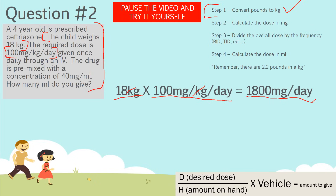Step three: divide the overall dose by the frequency. The dose is 100 milligrams per day given once daily through an IV — the IV route has no real relevance to this calculation. Since it's once a day, we divide by one, so it remains 1,800 milligrams per dose. To clarify: if it were bid, divide by two; tid, divide by three. In this case it stays the same.